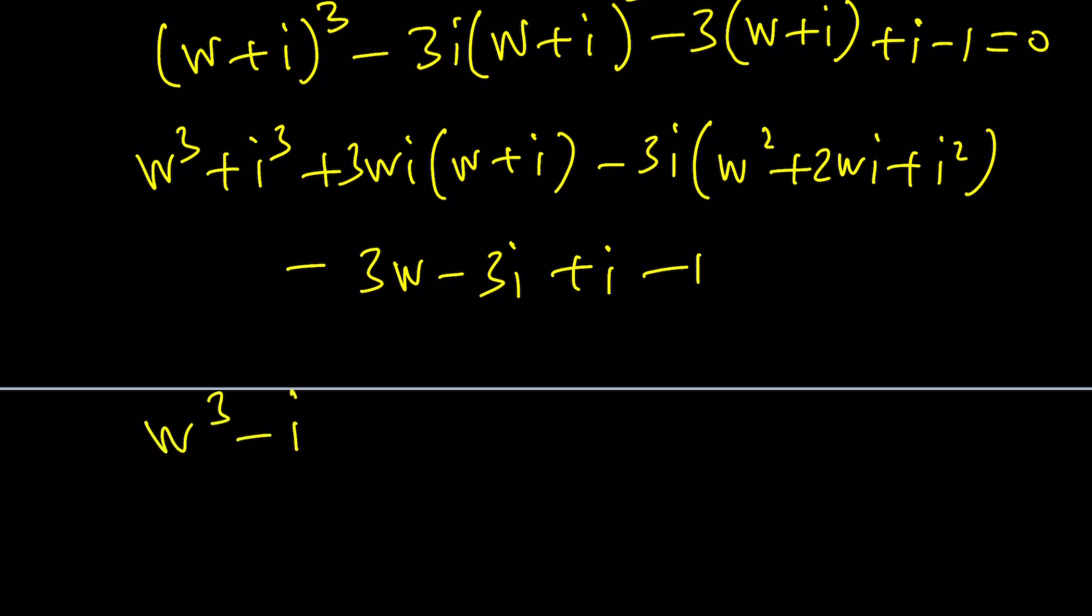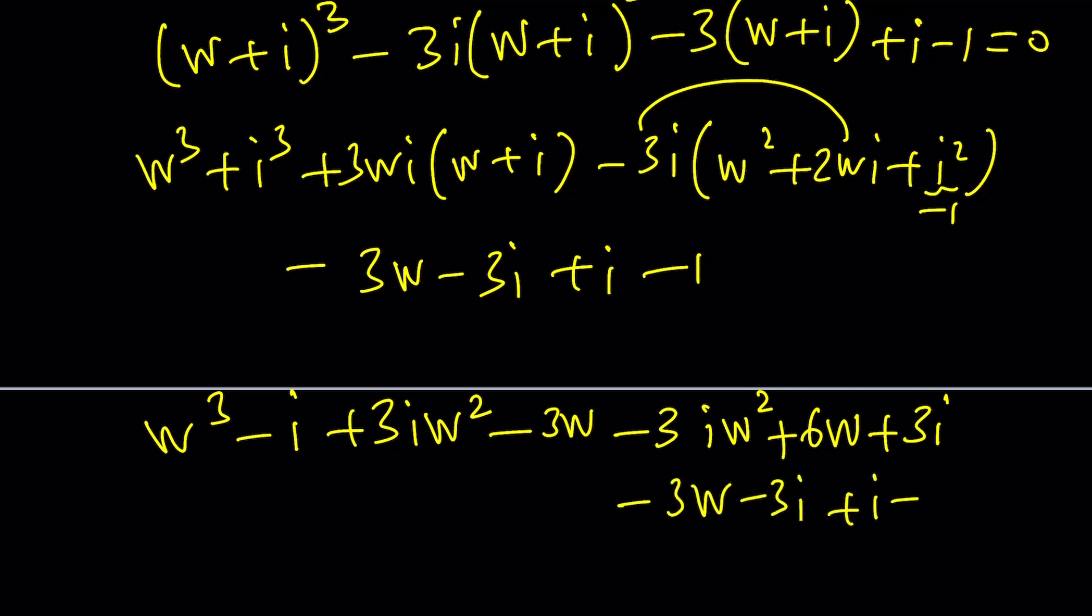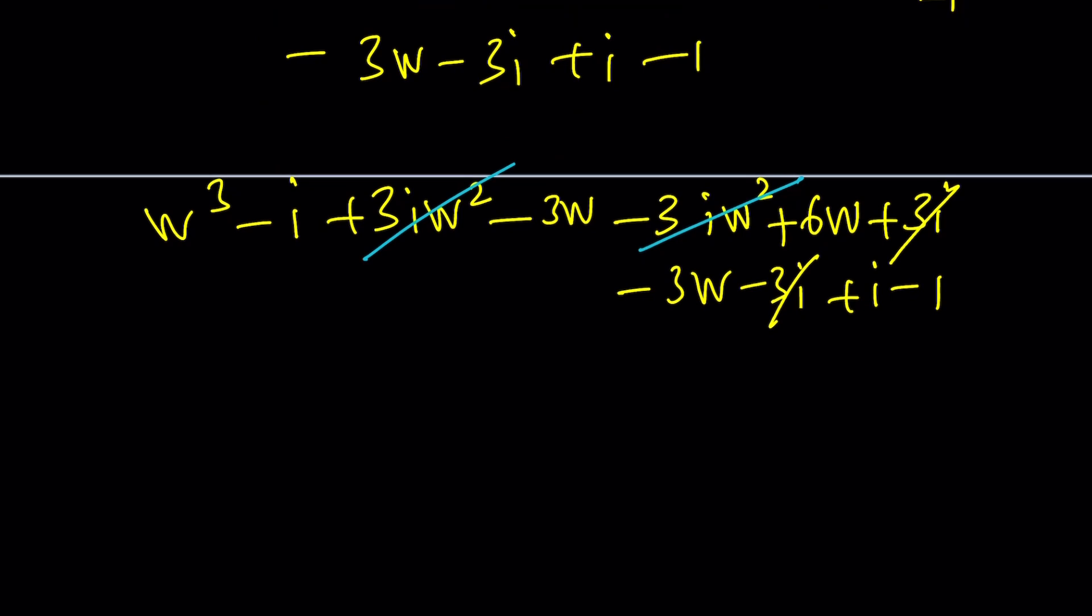W cubed minus I plus 3IW squared minus 3W minus 3IW squared minus... Actually, that's going to turn into a plus sign because we get an I squared minus 6W. And that's going to be actually a negative 1 multiplied by negative 3I. That's going to give us a positive 3I. And I believe that's going to cancel out with the negative 3I plus I minus 1. These two cancel out. And of course, most importantly, these two cancel out.